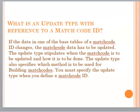What is an update type with reference to a match code ID? If the data in one of the base tables of a match code ID changes, the match code data has to be updated. The update type stipulates when the match code is to be updated and how it is to be done. The update type also specifies which method is to be used for building the match code. You must specify the update type when you define a match code ID.